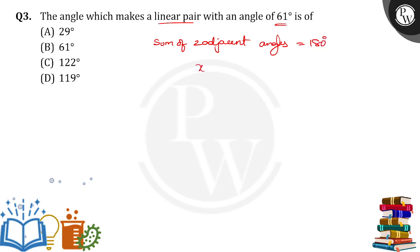Let the other angle be x. x plus 61 degrees is equal to 180. So x is equal to 180 degrees minus 61 degrees. So I will get 119. So option D is the angle which makes a linear pair with 61 degrees.